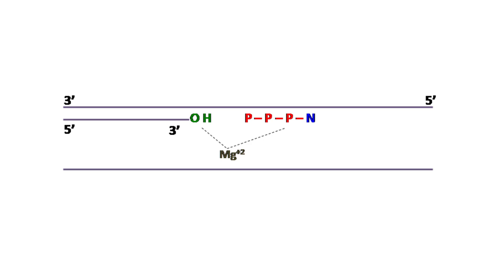The magnesium ions added in the reaction mixture play an important role in catalysis. It allows the reaction between the hydroxyl group and the alpha-phosphoryl group of the incoming dNTP.